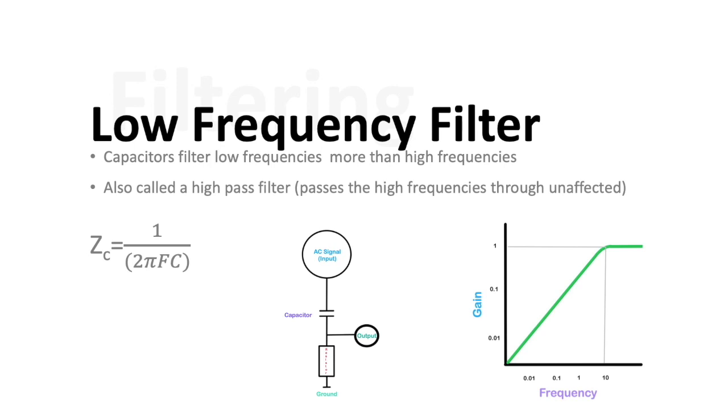So, essentially, the equation you can think of, which does come up on board exams, is that the impedance of a capacitor is equal to 1 over 2 pi times the frequency times the capacitance. This entails that the higher the frequency is, the less opposition to current flow there is for a given capacitor.